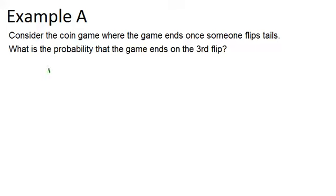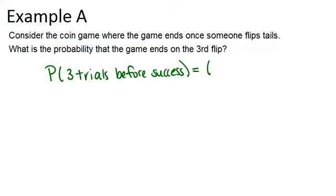So what we want to think about is the probability that it will take three trials before success. So that equals the probability of failure, which in this case is flipping heads, which is a probability of one half, raised to the power of how many failures we want.